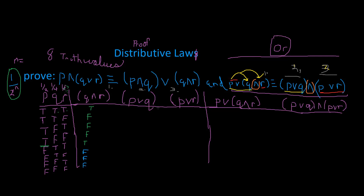Now we have P or Q. For an OR statement, if one is true, the whole statement is true. So the first four rows are all true — you can see the pattern: the first four are true. Then we have true, true, false, false for P and Q in the next rows — so the next two are true, and the bottom two rows are false. That adds up to eight total.